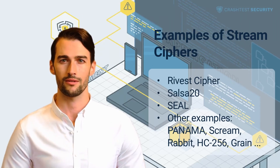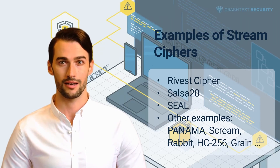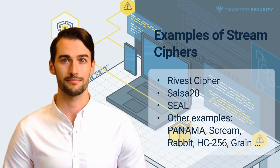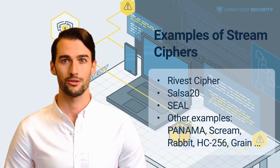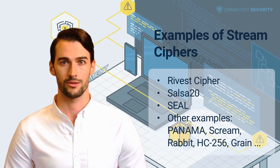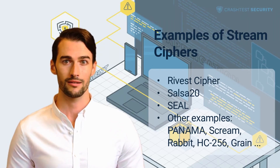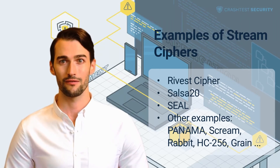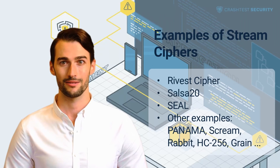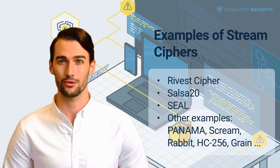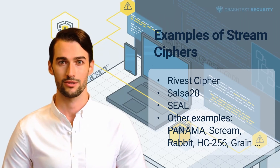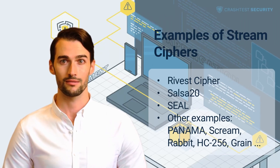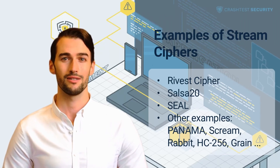Software Optimized Encryption Algorithm — SEAL — is an additive binary stream cipher optimized for machines with 32-bit CPUs and sufficient memory resources. The encryption standard relies on a pseudorandom family that uses a length-increasing function and a 160-bit key to map the 32-bit string to a string of any length. Other examples of stream ciphers include Panama, Scream, Rabbit, HC-256, and Grain.